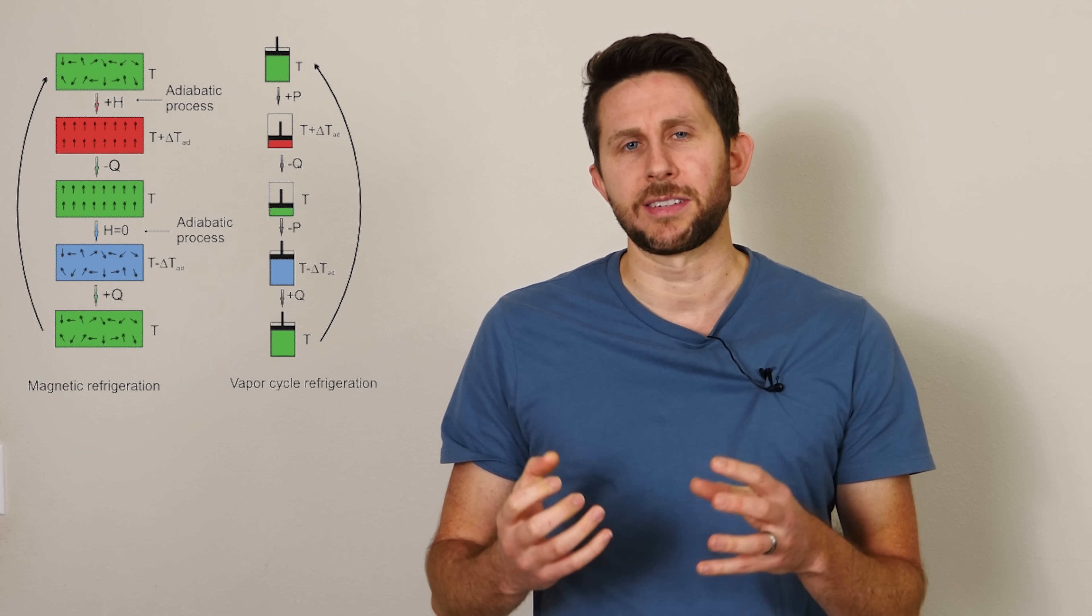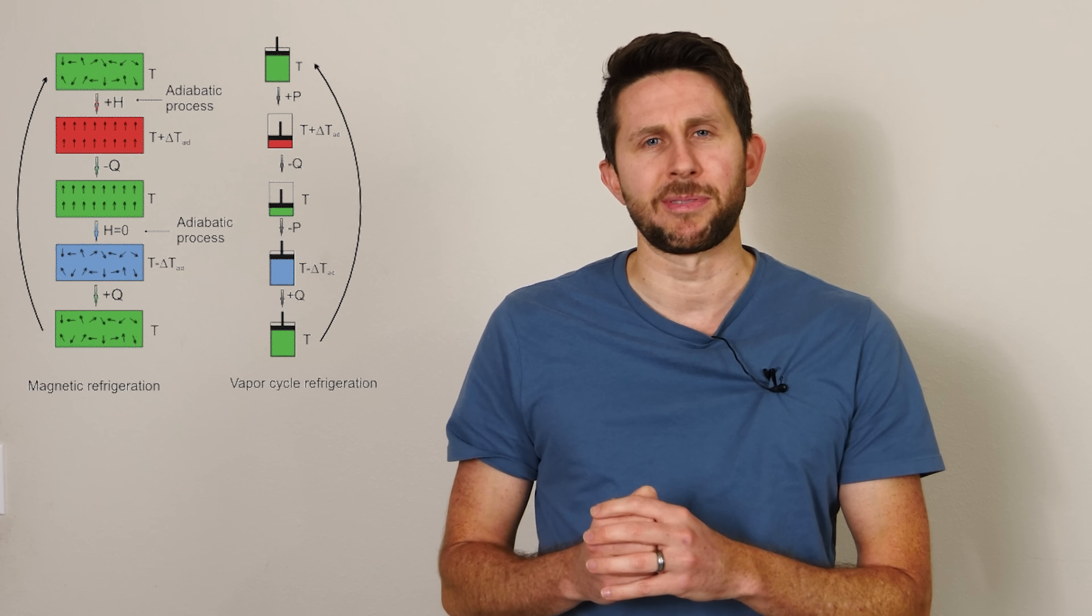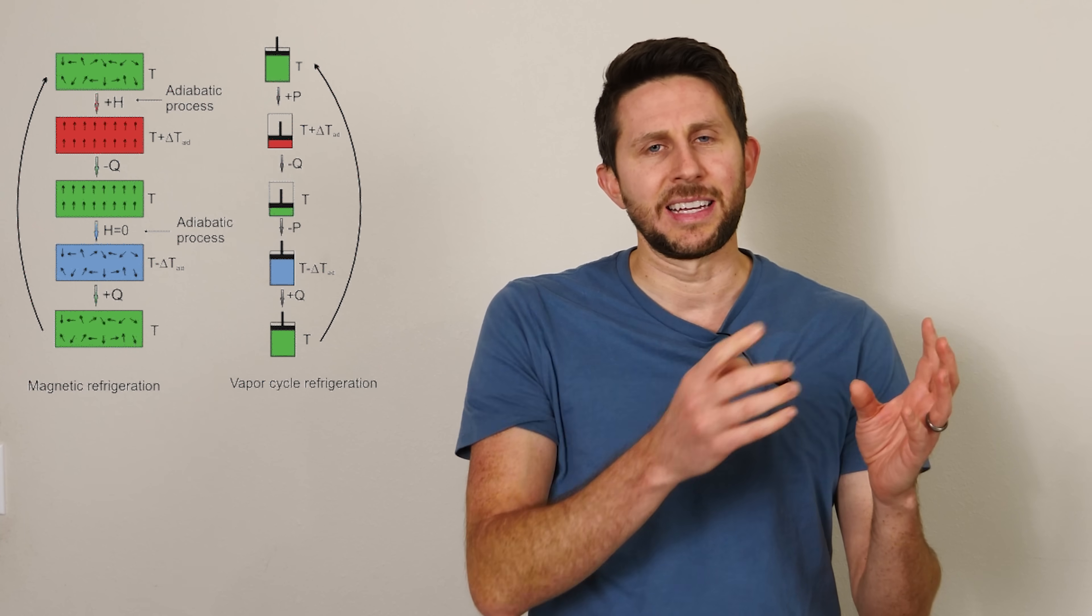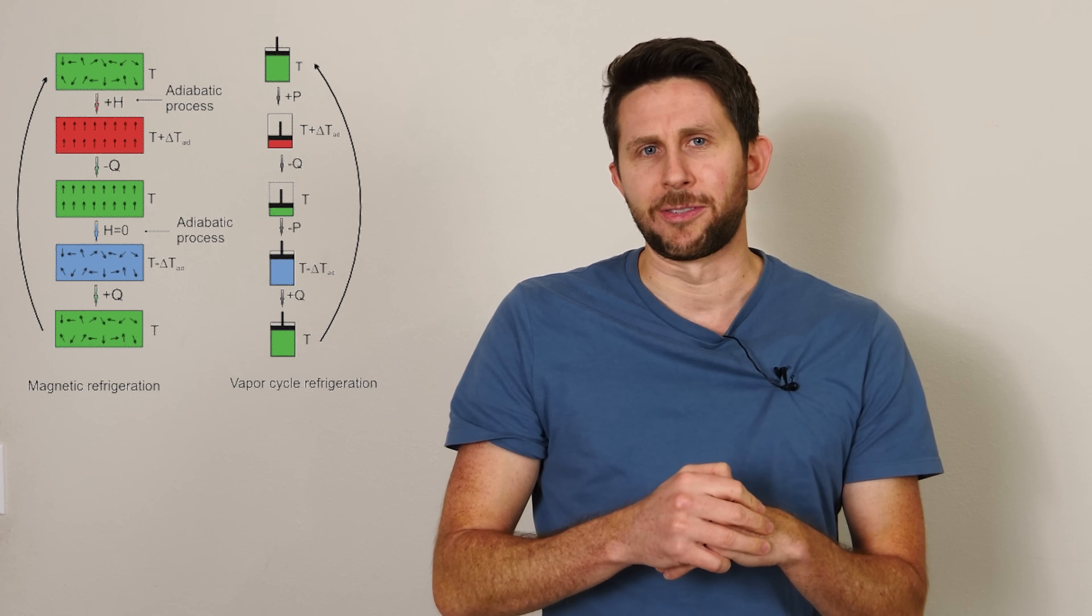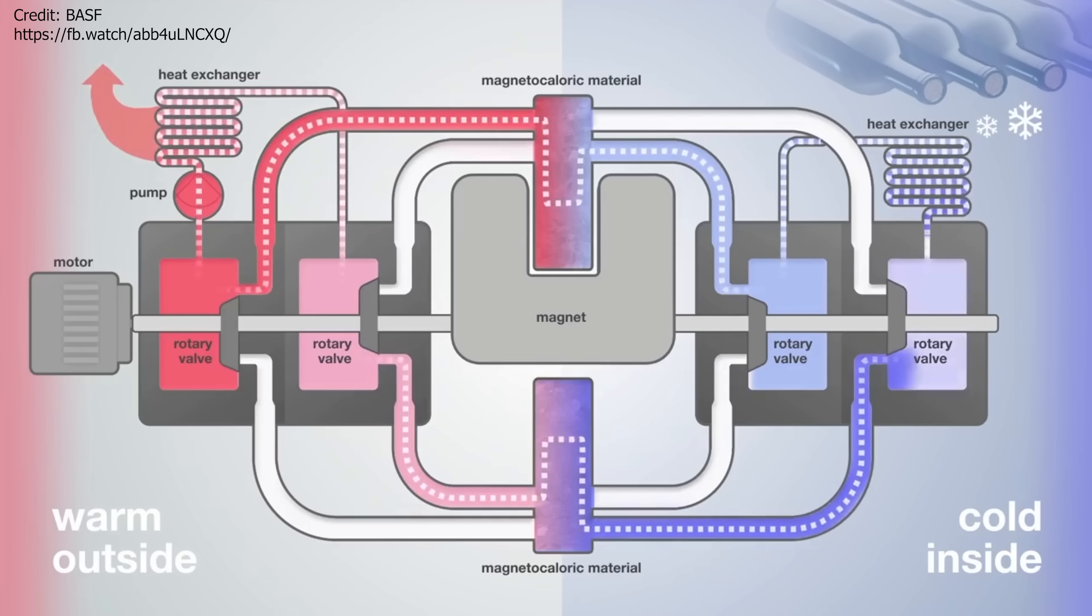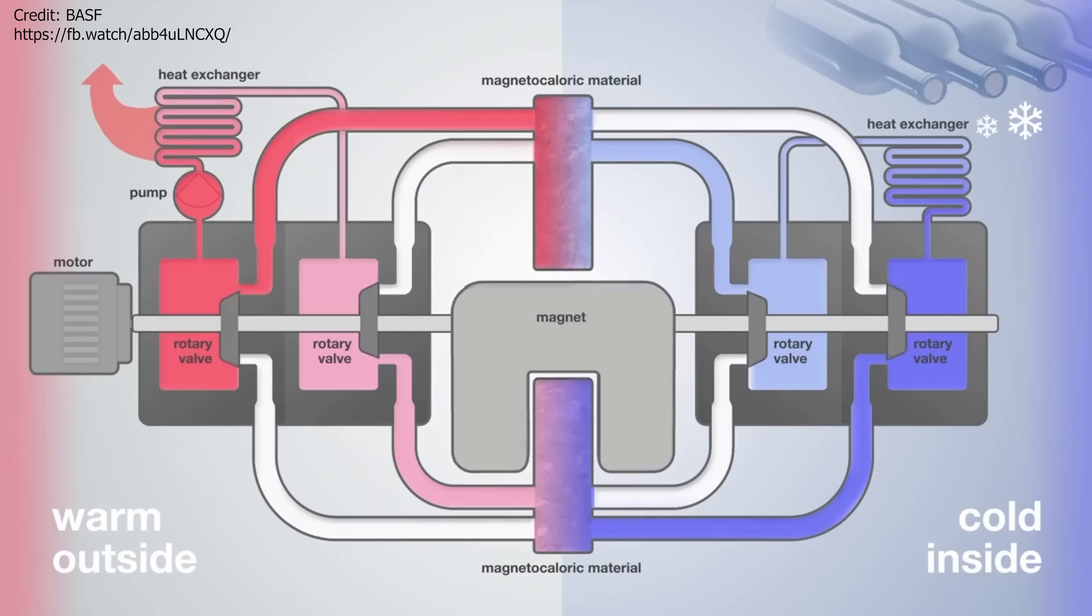So in magnetic refrigeration, what you do is you replace the compressor and evaporator with a magnet and gadolinium that's alternating back and forth. So you can heat it when it's in a magnetic field and then you remove that heat with some heat transfer system and then you can cool it down and that cooled down system can collect heat from whatever you're trying to cool.